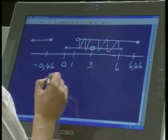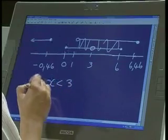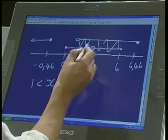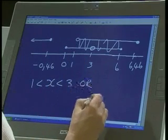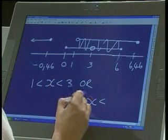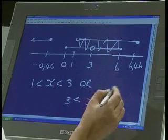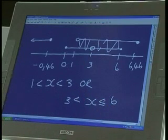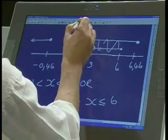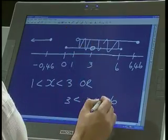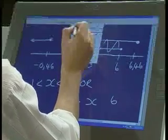There is the intersection. The intersection is from 1 to 3, excluding 1 and excluding 3, or from 3 to 6. Excluding 3, but including 6. Let me just check, I need to check that my answer is right there. No, excluding 6, sorry, excluding 6. Good, that's it.